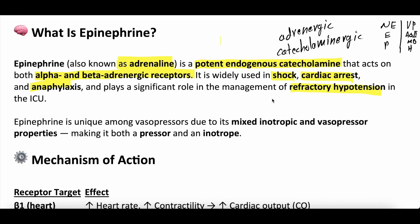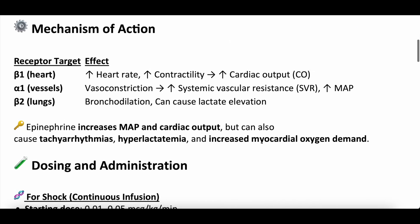What is interesting about epinephrine, especially compared to norepinephrine, its sister vasopressor, is that epinephrine actually has mixed inotropic and vasopressor properties. Inotropic meaning increasing cardiac output, so affecting the heart more, and vasopressor meaning increasing the mean arterial blood pressure. So it has this mixed effect, which comes from its mechanism of action. The ratio and how strongly it affects different receptors is different from norepinephrine.